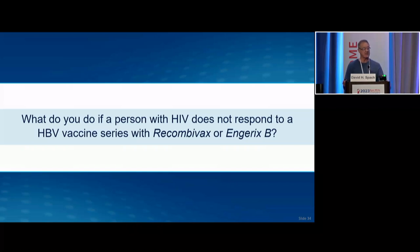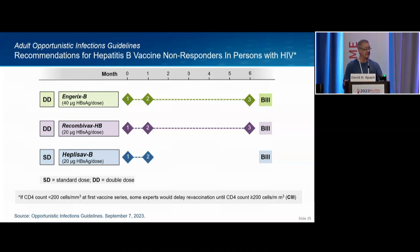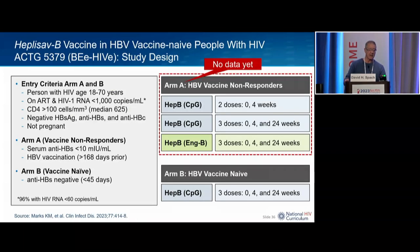What do you do if a person with HIV doesn't respond to Recombivax or Engerix-B historically? The guidelines say you can repeat the double-dose series again, or you could turn to Heplosav-B. In our clinic, I haven't seen a lot of success with doing the same thing over again unless they had a really low CD4 count when starting. So personally, I go ahead and give Heplosav-B to non-responders. We should get good data from the Beehive Study on non-responders around June 2024.